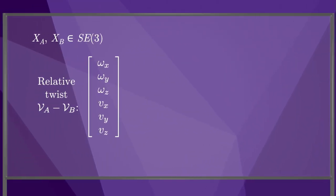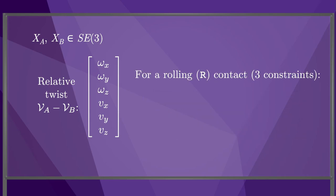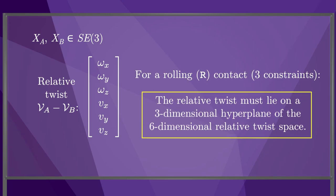In general, if A and B are spatial bodies, then their twist relative to each other, VA minus VB, is a six-vector. To enforce the single constraint of a sliding contact, the relative twist must lie in a five-dimensional hyperplane of the six-dimensional relative twist space. To enforce the three constraints of a rolling contact, the relative twist must lie in a three-dimensional hyperplane of the six-dimensional relative twist space.